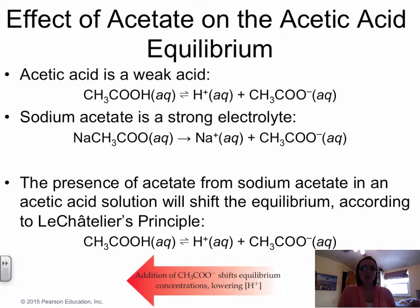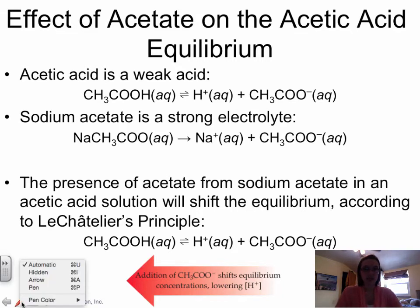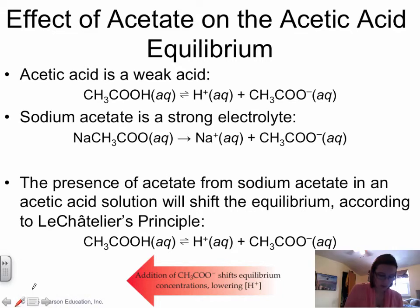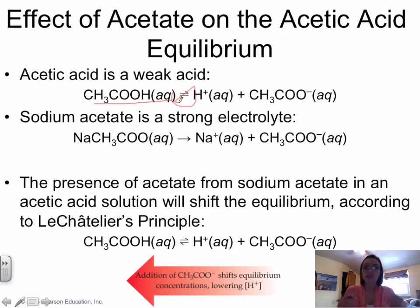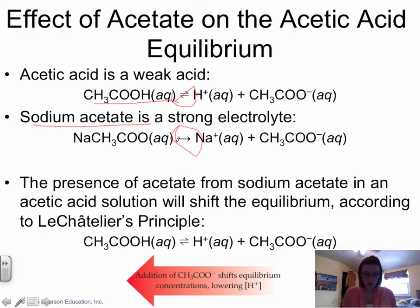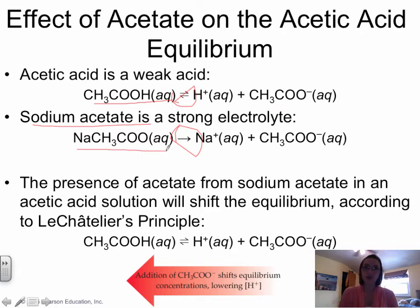Let's start by looking at a scenario. Say we have acetic acid, which is a weak acid, and we have sodium acetate. Acetic acid has a double arrow because it's a weak acid — it only partially ionizes in water. Sodium acetate has a single arrow because it's a salt and a strong electrolyte, so it dissociates completely into its ions.